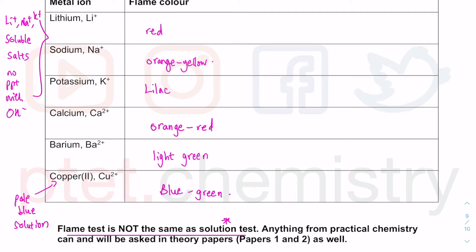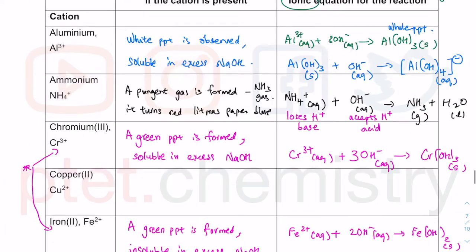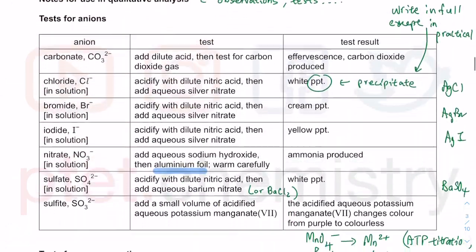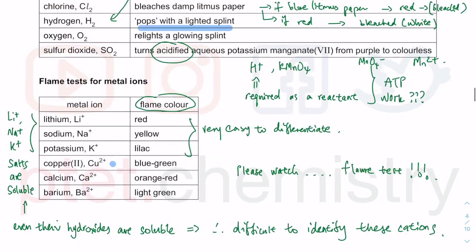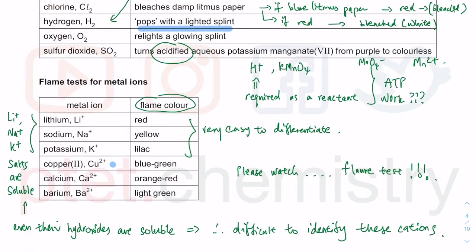Thank you for watching. This wraps up pretty much the whole topic on chemical analysis, where you really need to know these particular tables — including tests for anions, cations, gases, and flame tests. These are what are given in a practical paper; you will never be given this in a theory paper, so go in fully prepared. The more you practice writing them on a blank piece of paper and practicing the equations, the better you remember them. Do go through some question tutorials to understand how these concepts are applied across different types of past paper questions.